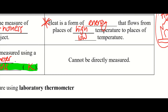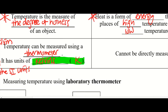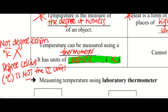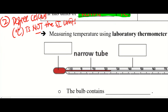Heat cannot be directly measured. You cannot just measure it — you can feel heat coming from something, like from a fire, you can feel it — but there's no instrument to measure how much heat there is. There's no way to do it. But temperature — how hot or how cold something is — yes, you can use a thermometer.